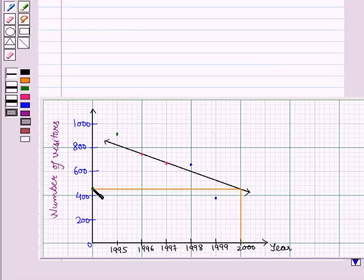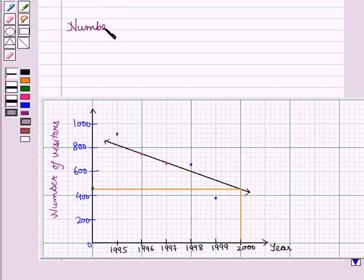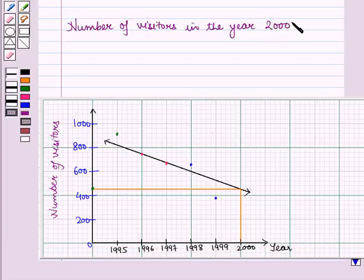Here, corresponding to the year 2000, this point represents the value on the y-axis. Number of visitors in the year 2000 are around 450.